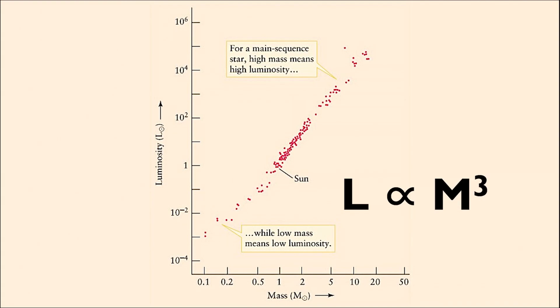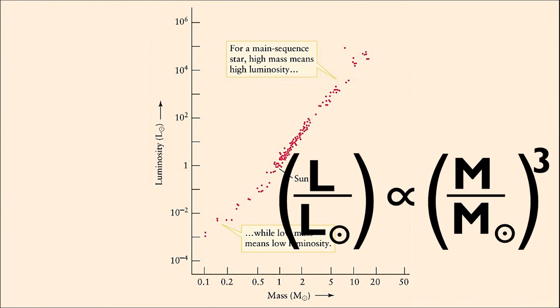If that doesn't make sense right away, don't worry, we'll break it down in an example soon. Now, in reality, this relationship is written more like this, as a ratio of the luminosities and masses of the Sun and the particular star in question.